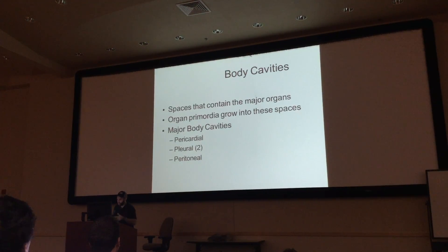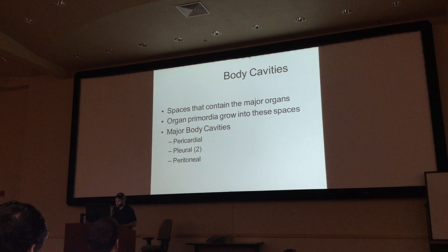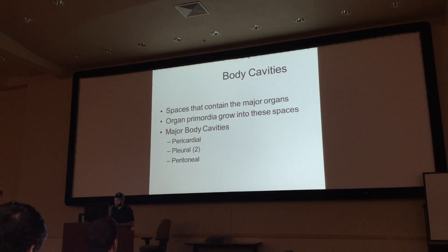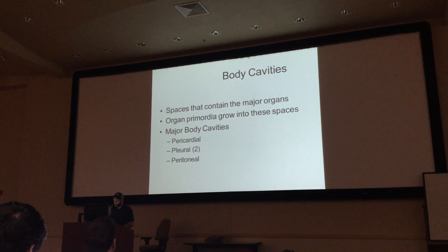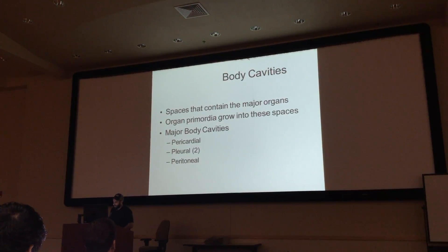He's going to explain how you get your three major body cavities in your thorax and abdomen, which are your pericardial cavity, your pleural cavity, and your peritoneal cavity.